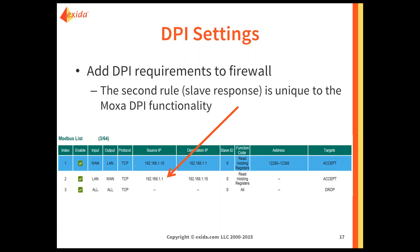The second line is unique to the Moxa configuration. The Moxa requires you to put in a rule to allow the slave response to come back from the device. So in this case it's LAN to WAN — the reverse. It's coming from .1, which is my PLC, to .10, which is my HMI, covering all slave IDs and all holding registers. What this does is: for any read-holding register request that goes out to this device, the slave response is permitted to come back. Line three: all other function codes trying to be passed to all devices through this firewall are going to be dropped and logged. Again, that's firewall best practice.